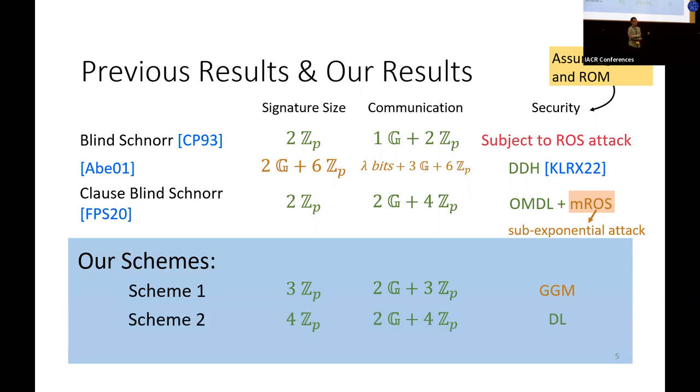For our second scheme, we can prove its security in the algebraic group model, assuming one-more discrete logarithm is hard, in addition to random oracle. However, we need to add an additional scalar to both signature size and communication.